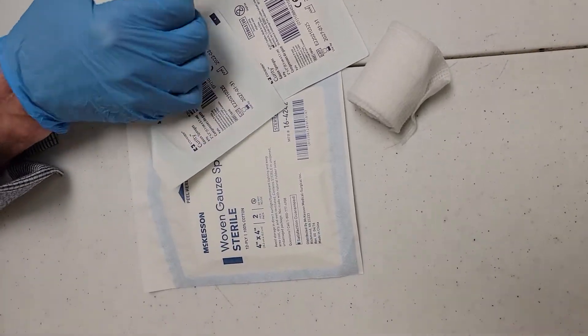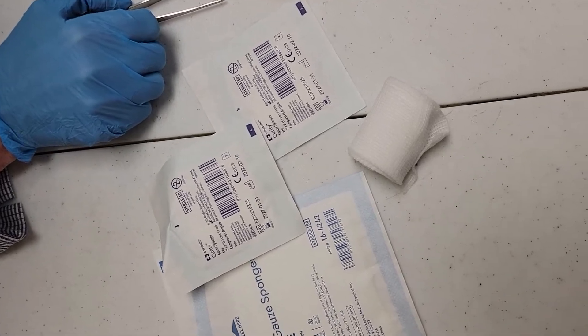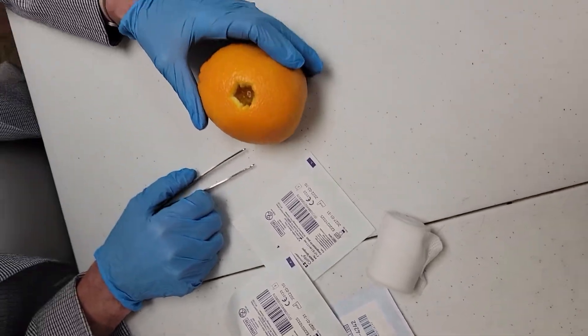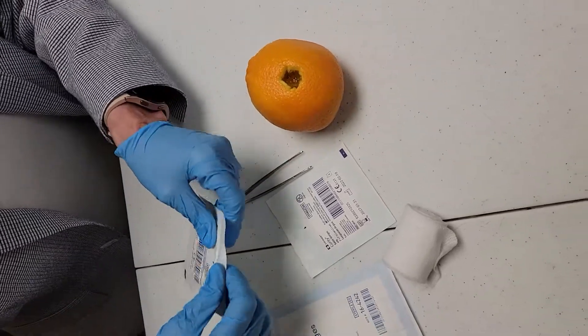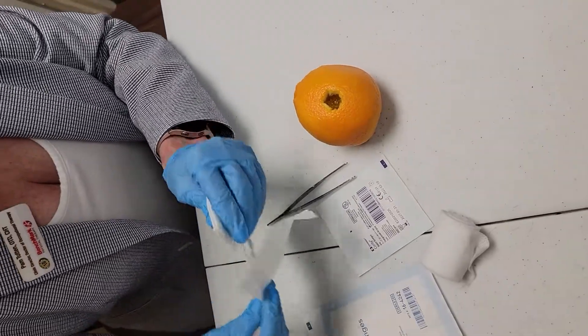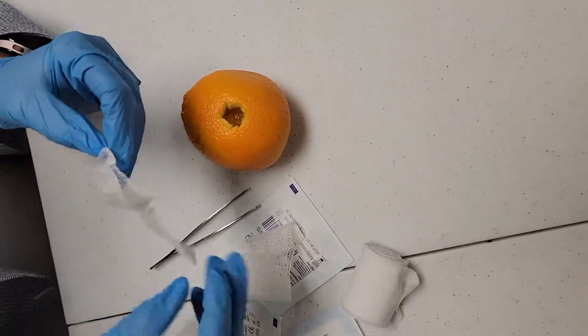All right, ready. So we have the sterile gauze sponges and then the rolled gauze and there's our wound. So packing's easier than you think. This is a little bigger wound and we're going to see in the hand.